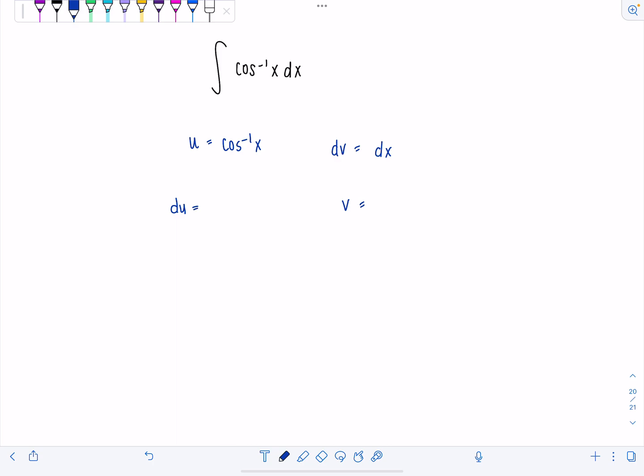And then now, du, you should know this, it's negative 1 over square root 1 minus x squared dx. What I think of to myself is cosine inverse has the same derivative as sine inverse of x. It's just got that extra negative, which makes sense because derivative of cosine x is also negative sine x. And then if dv is dx, then that makes v equal to x.